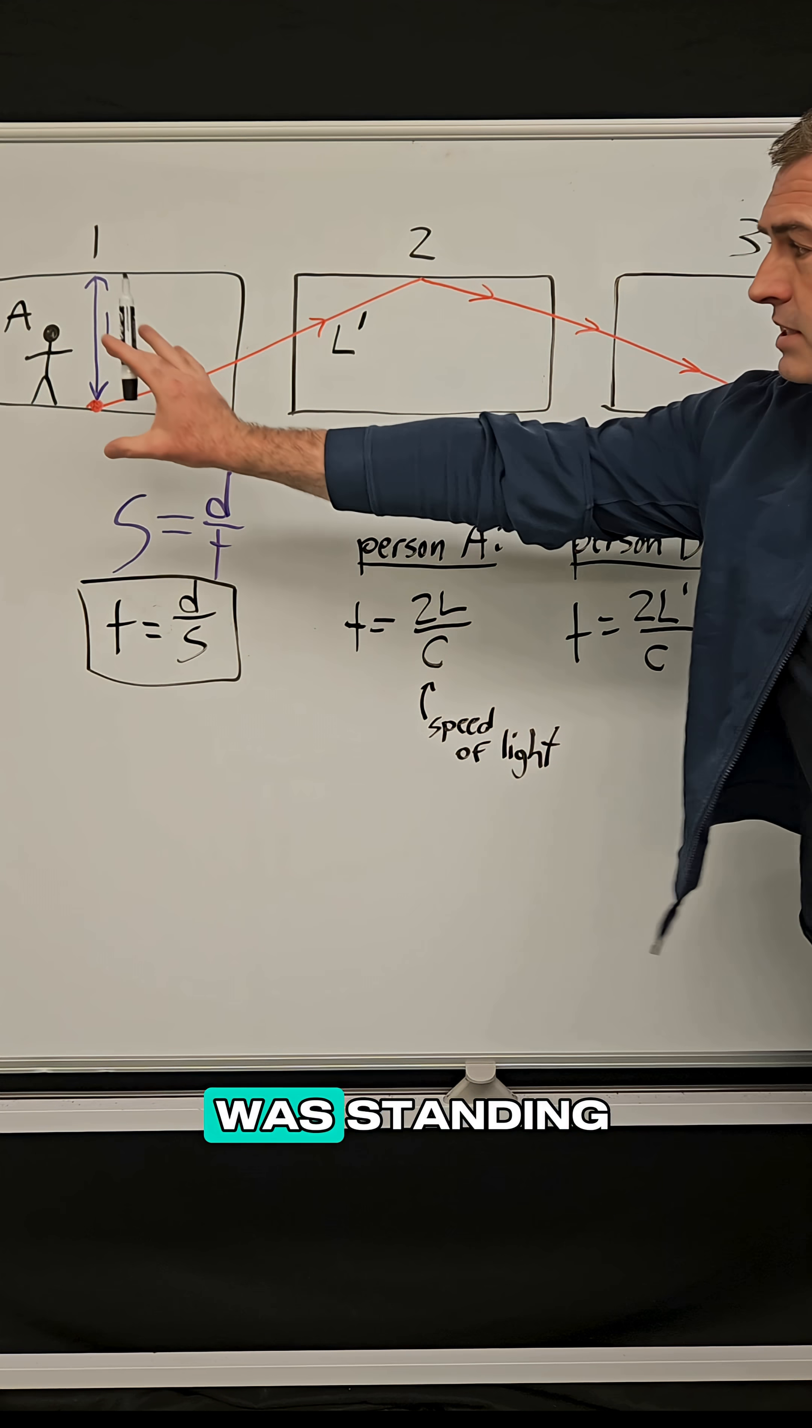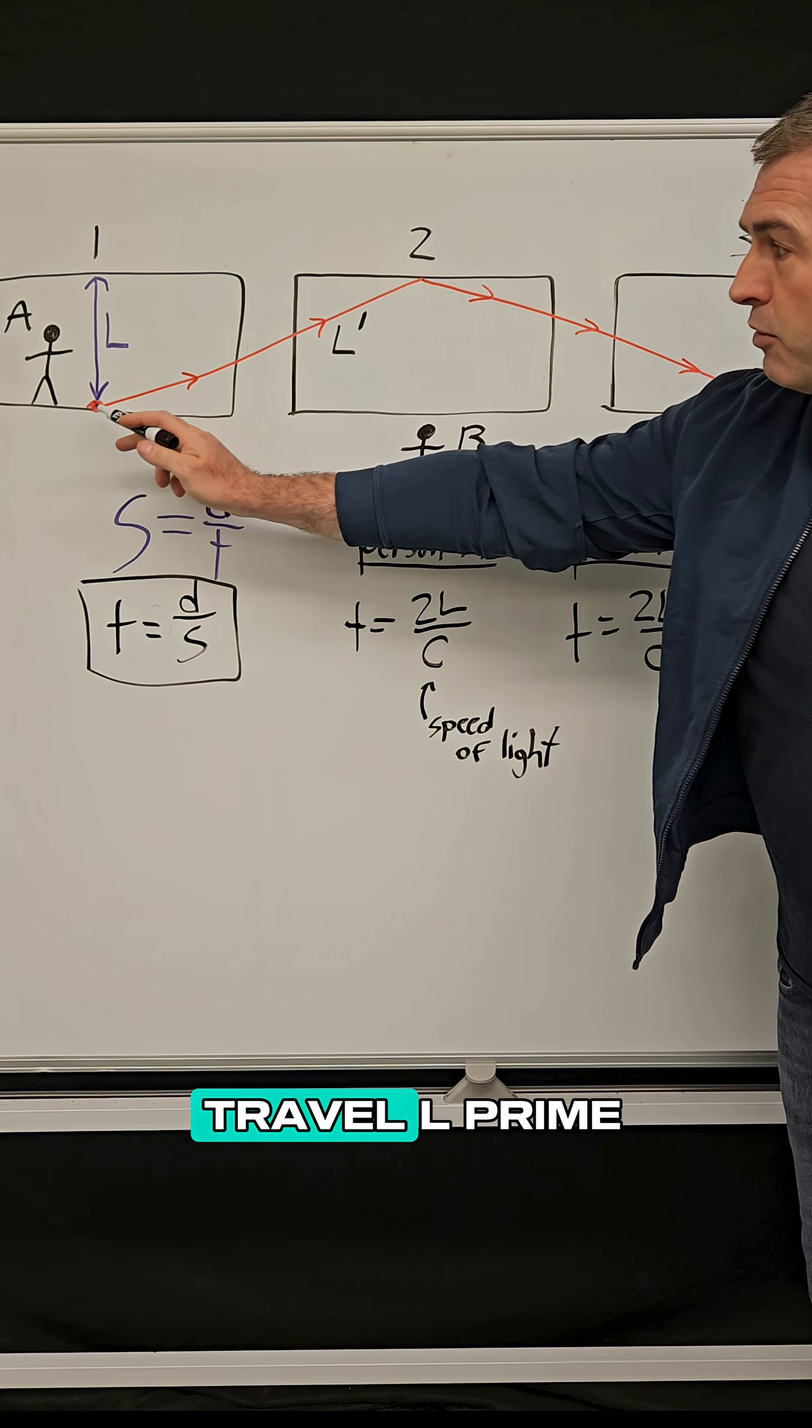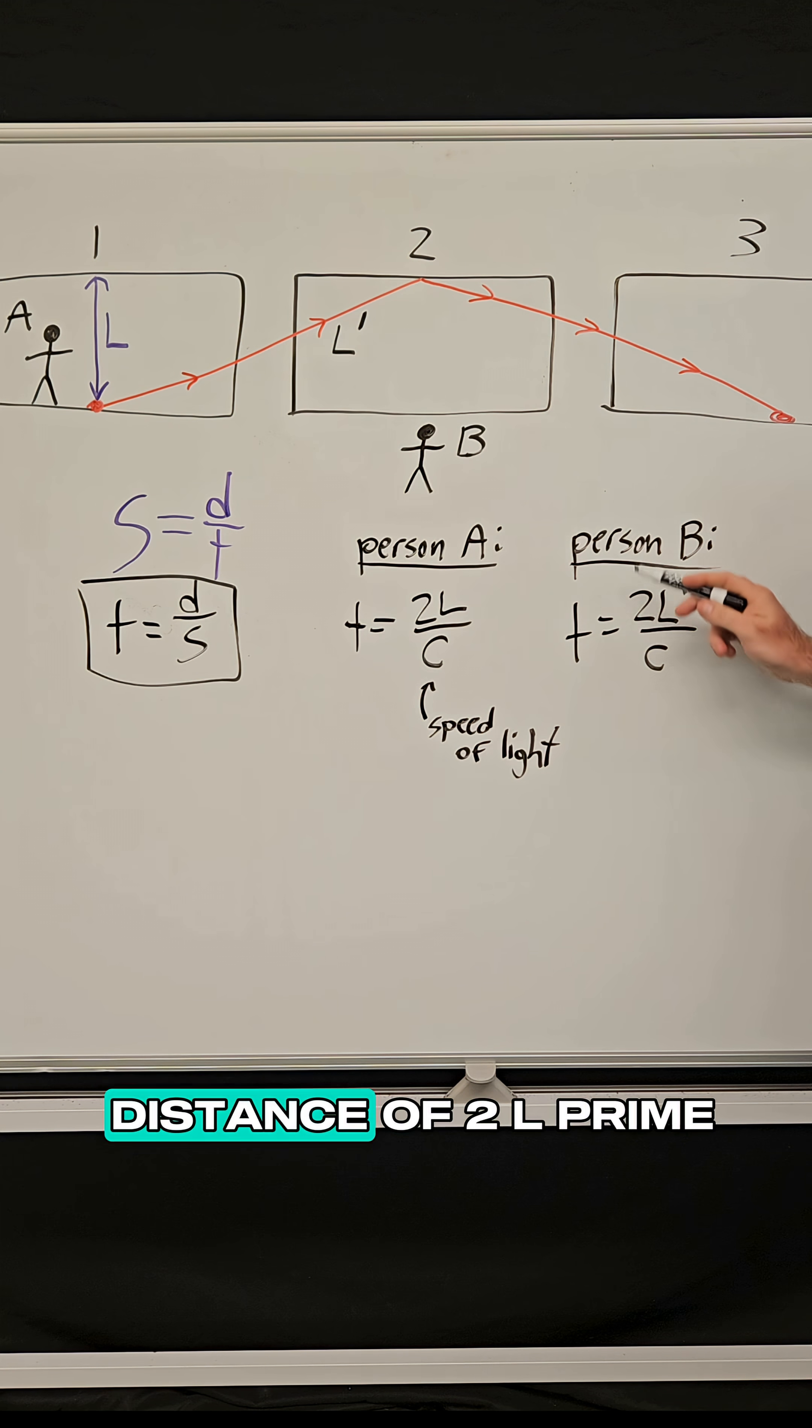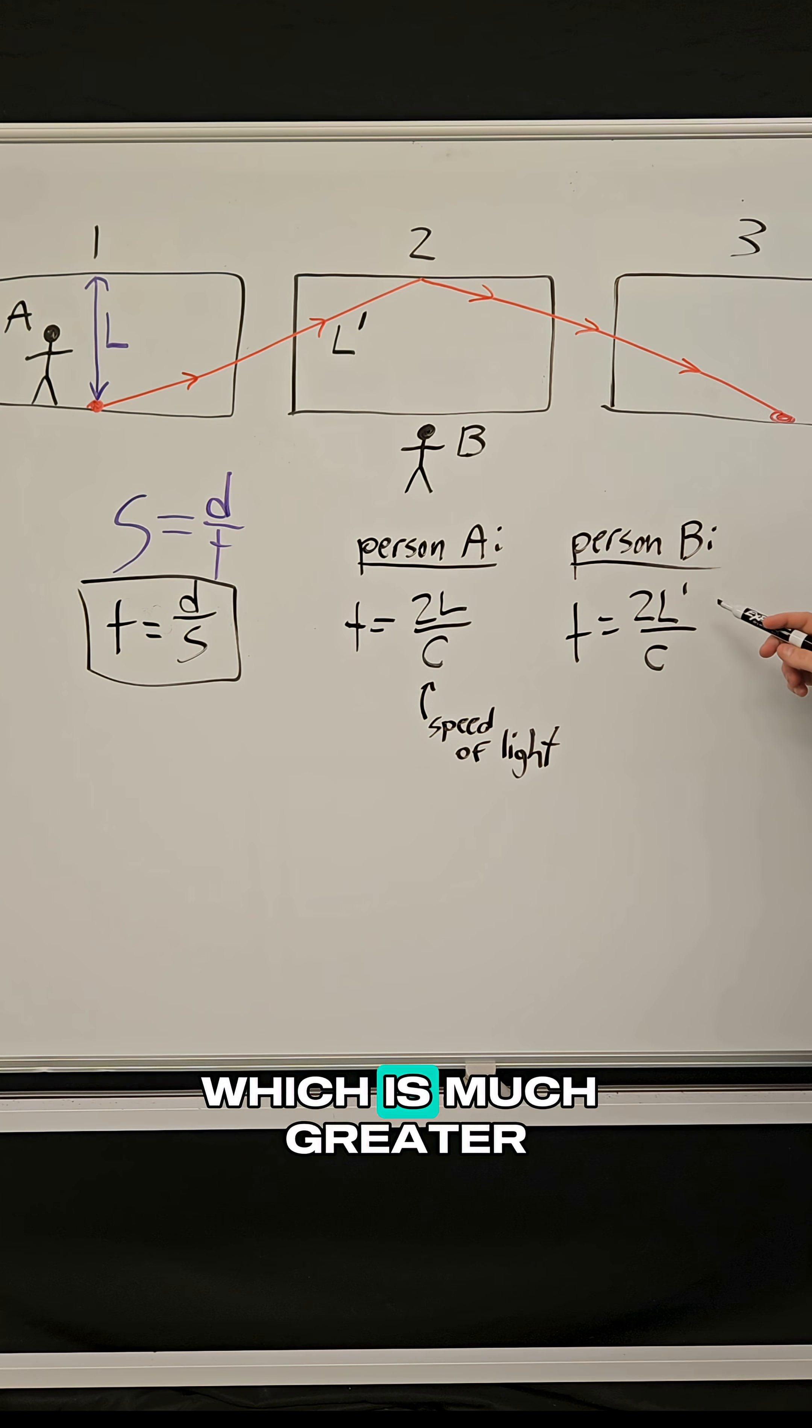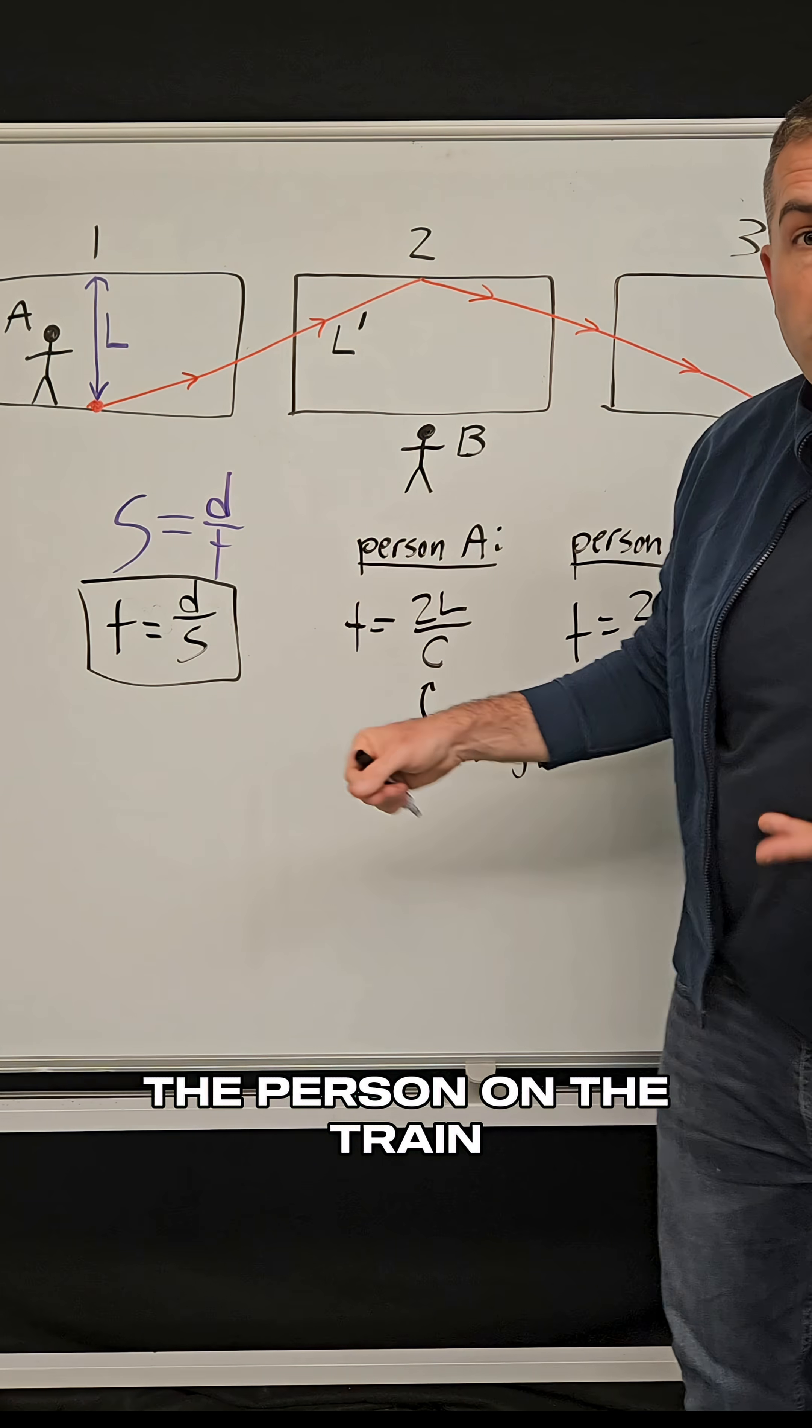But the person who was standing and watching the train go by, from their point of view, the laser had to travel L prime and then L prime back again. So that's a total distance of two L prime, which is much greater than the distance of two L from the perspective of the person on the train.